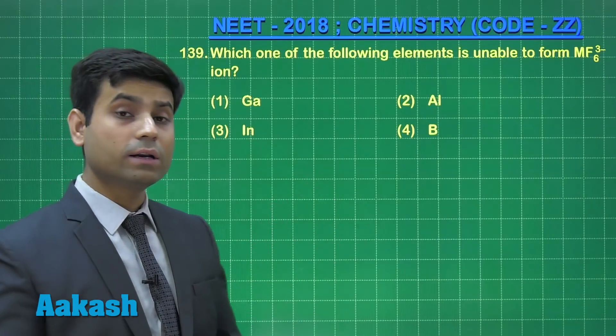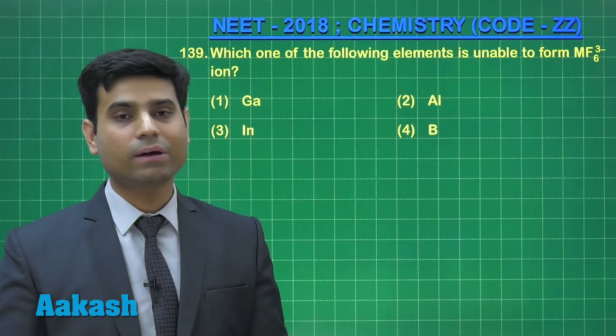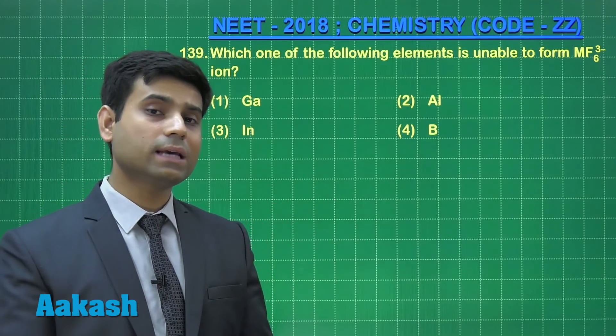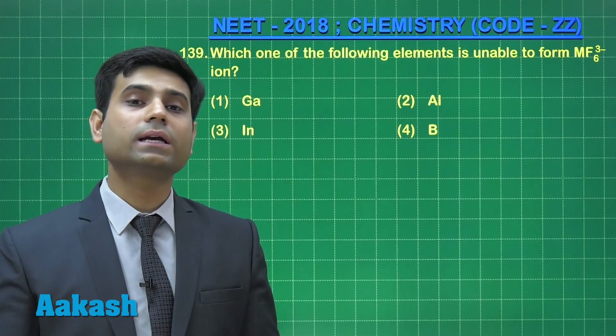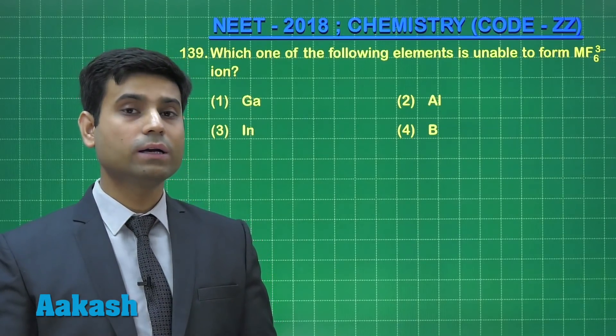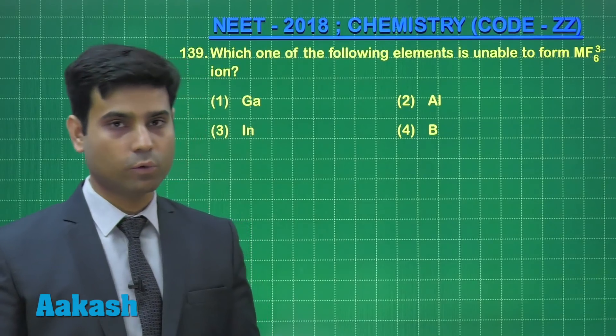Then we have boron. It does not contain any vacant d orbital. It has only 2s and 2p orbitals. So it cannot extend its covalency beyond 4. It cannot have more than 4 bonds.